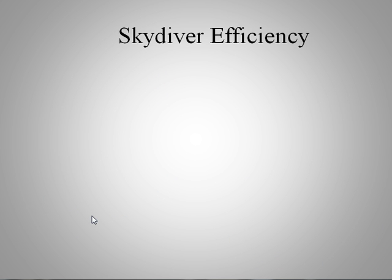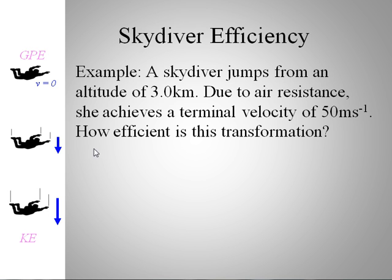Let's talk about our skydiver. Remember the skydiver jumping out of the airplane? We had conversions from gravitational potential to kinetic energy. If we ignored air resistance in our other problem, we ended up getting like 240 meters per second when it was at the bottom after a three kilometer fall. But in this case, there is air resistance, and the terminal velocity is 50 meters per second. What's the efficiency of this transformation?